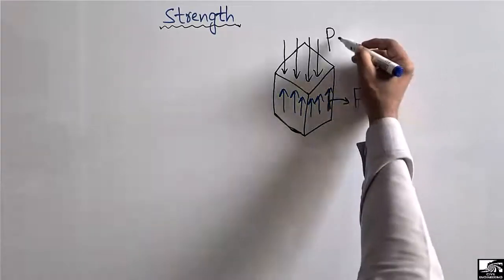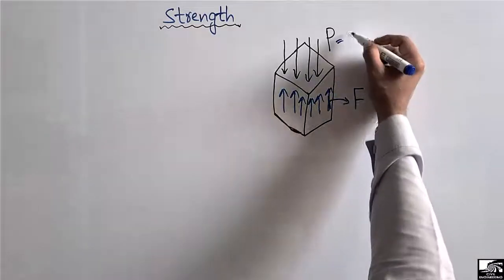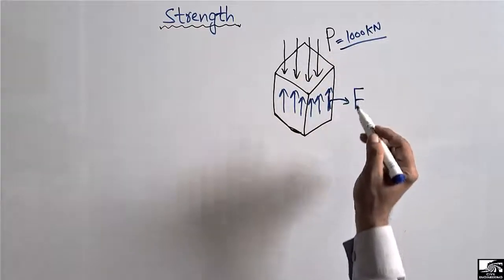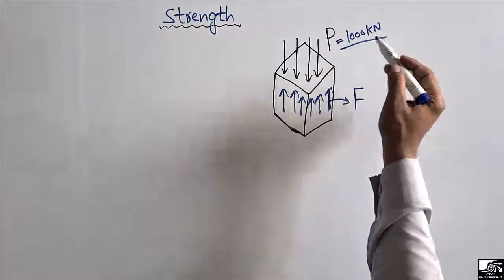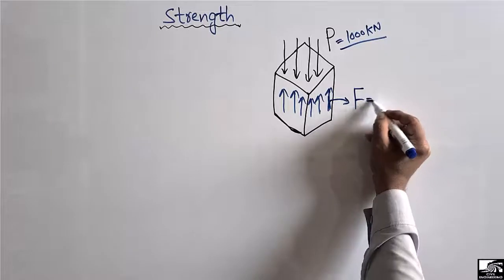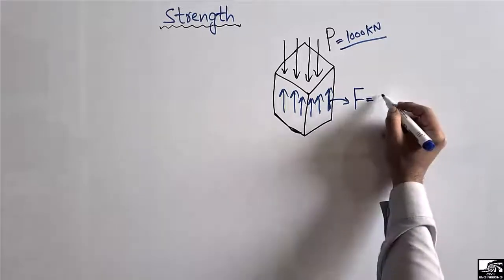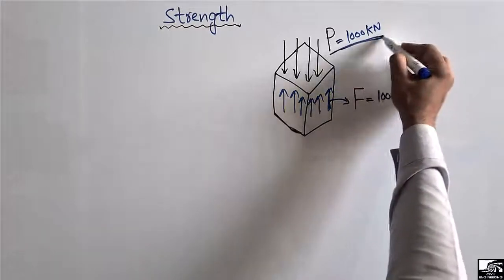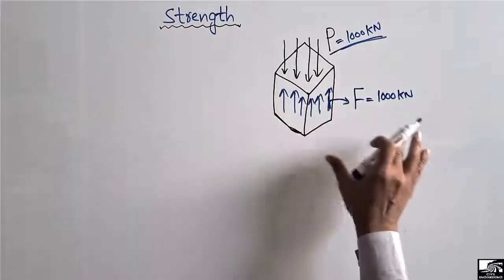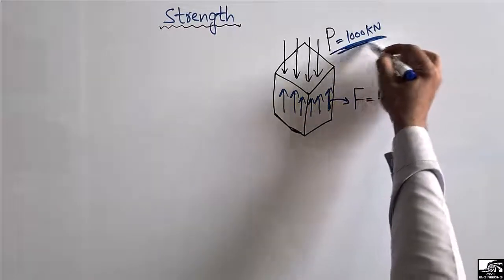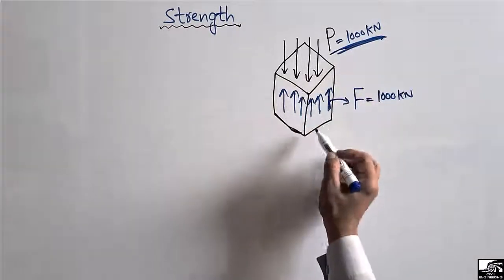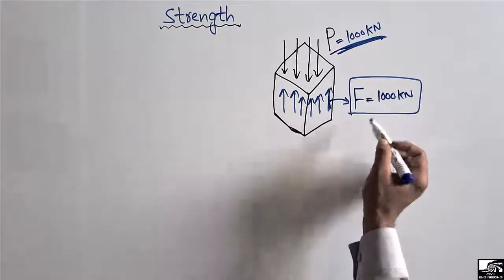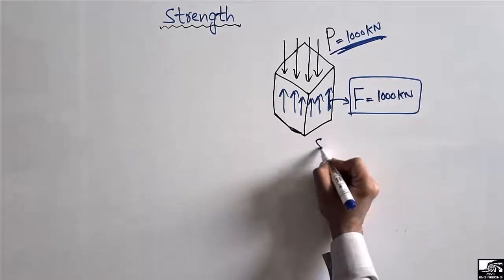Let's suppose there is an external load of 1000 kilonewtons. The maximum external load that this material can take is 1000 kilonewtons — at 1000 kilonewtons, this material breaks. So 1000 kilonewtons is both the maximum load and the maximum internal resistance of this material.